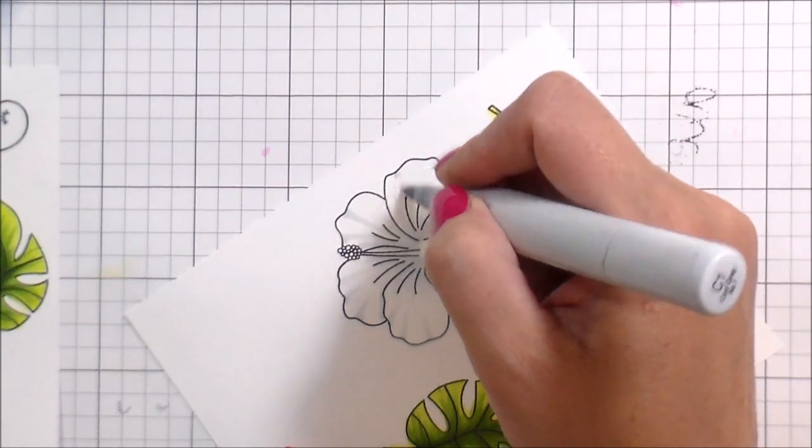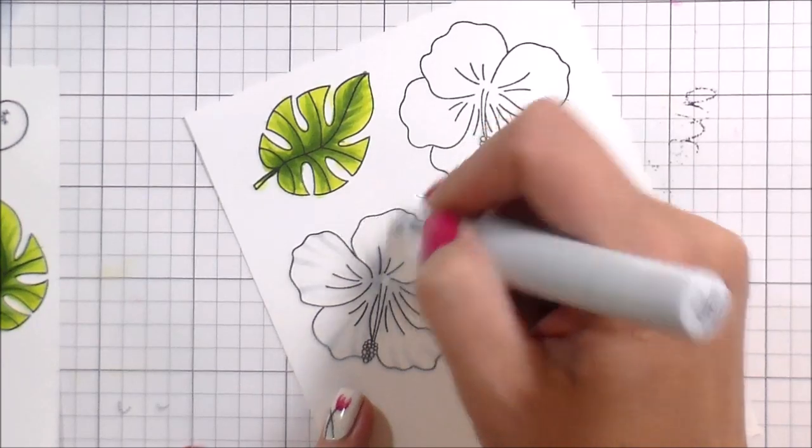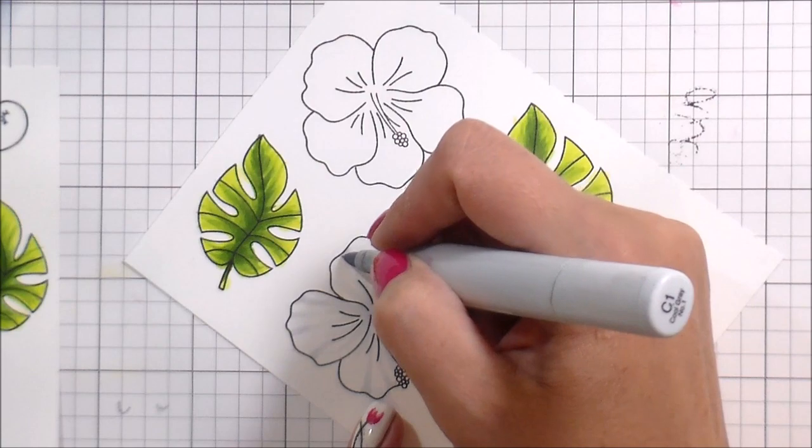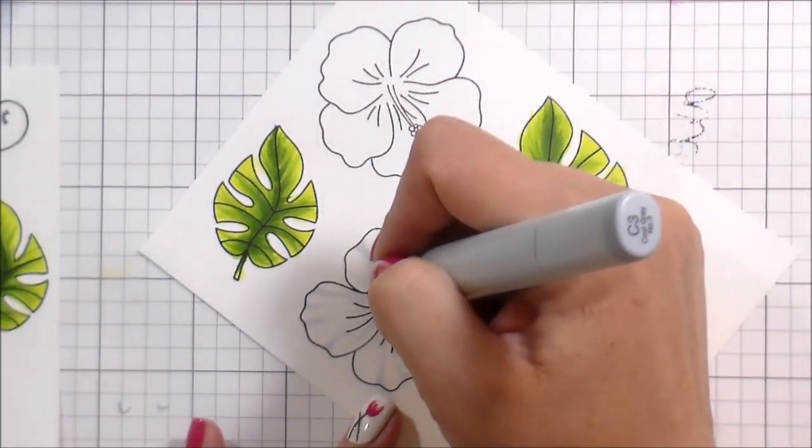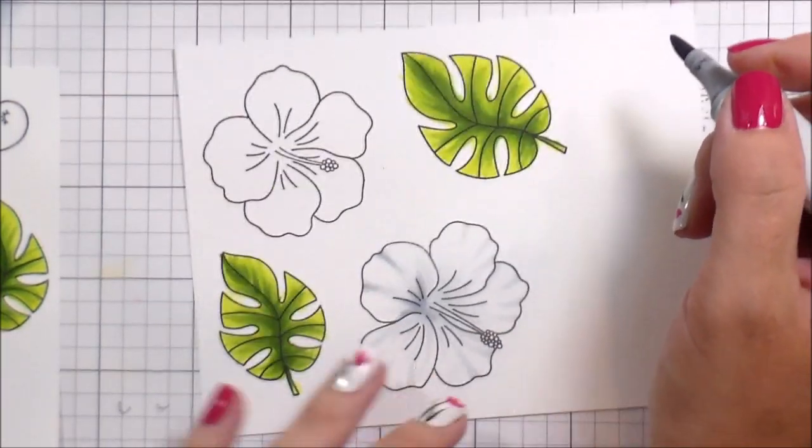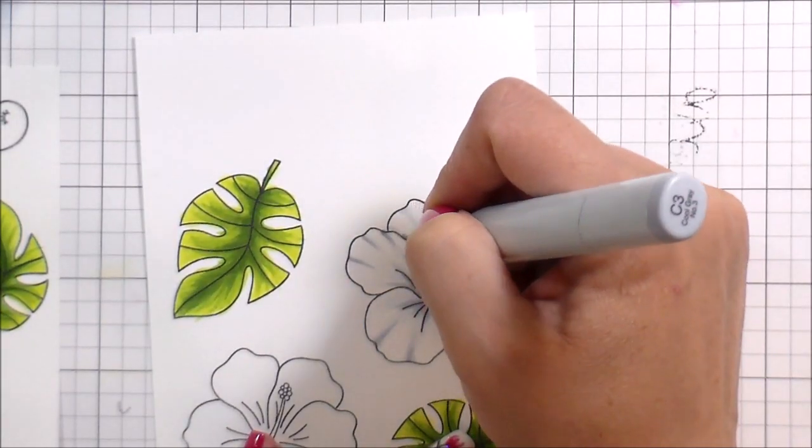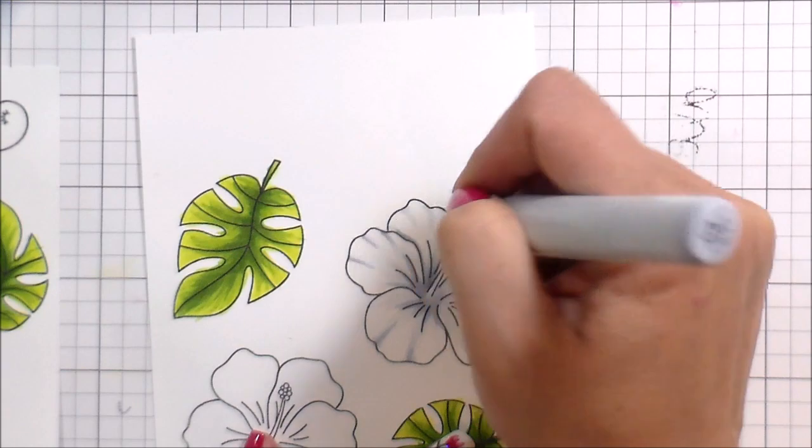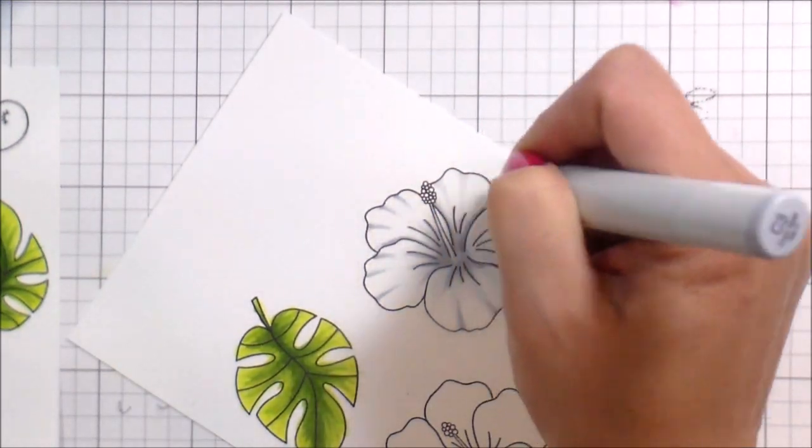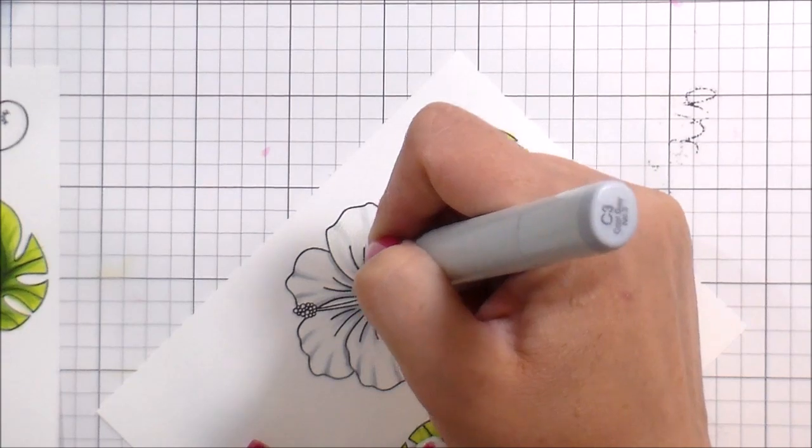Back to the card. This is the white version of the hibiscus. You'll see that I'm pretty much doing the same thing, but I'm leaving all of that white area. When you color something white, you're only putting in the shadows. So I'm only going to put some darker color where the flower is gathered, where the petals have those wrinkles in them, and where one lays on top of the other.